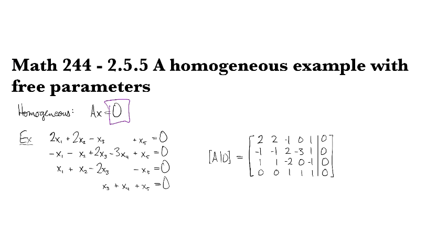So I'll just take A, which is 2, 2, -1, 0, 1; -1, -1, 2, -3, 1; 1, 1, -2, 0, -1; 0, 0, 1, 1, 1. And row reduce this guy.